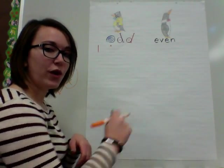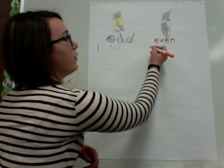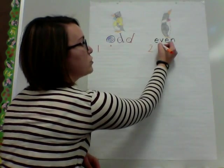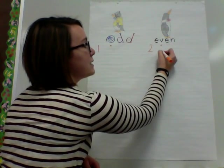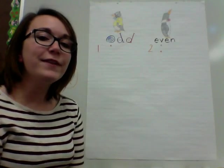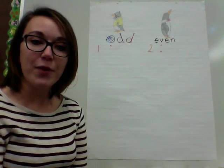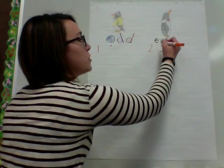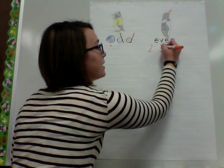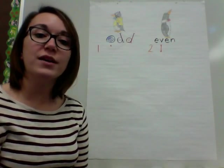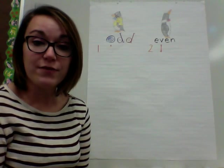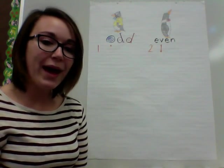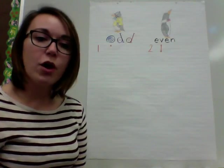When we move over and look at the even side, we will write the number two. Here, we'll draw a dot at the top and a dot at the bottom. If it is an even number, we get to connect those two dots and they can become a partner. So when we connect here, if it's even, those dots will connect and there won't be any dots that are left out or left over.